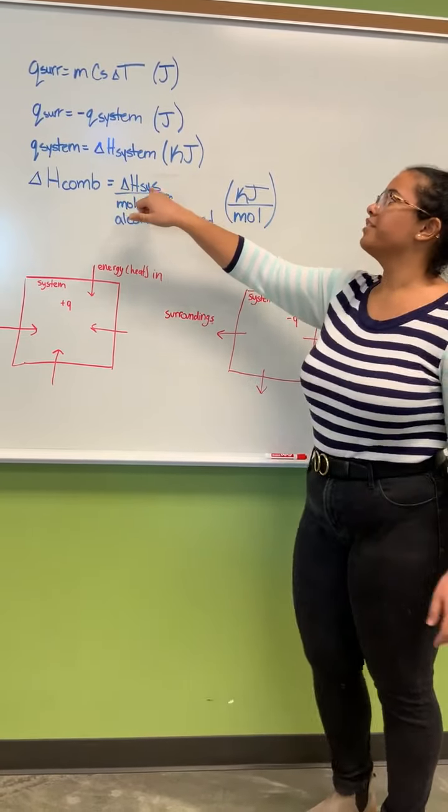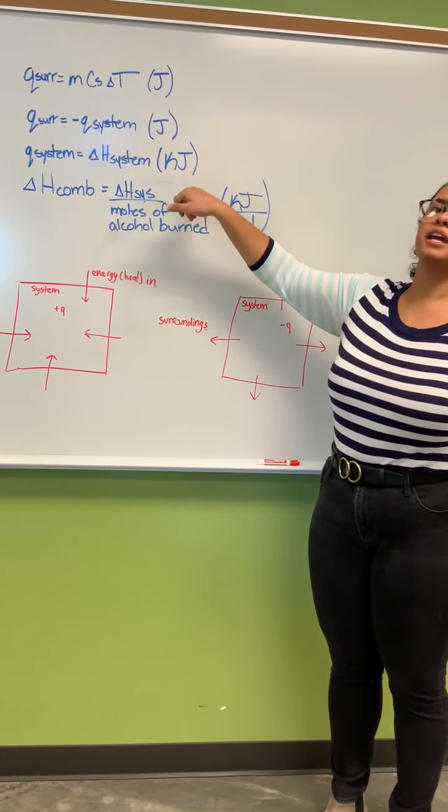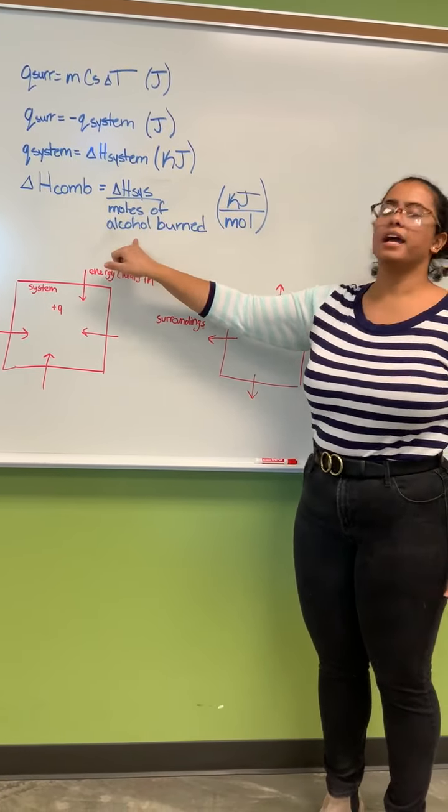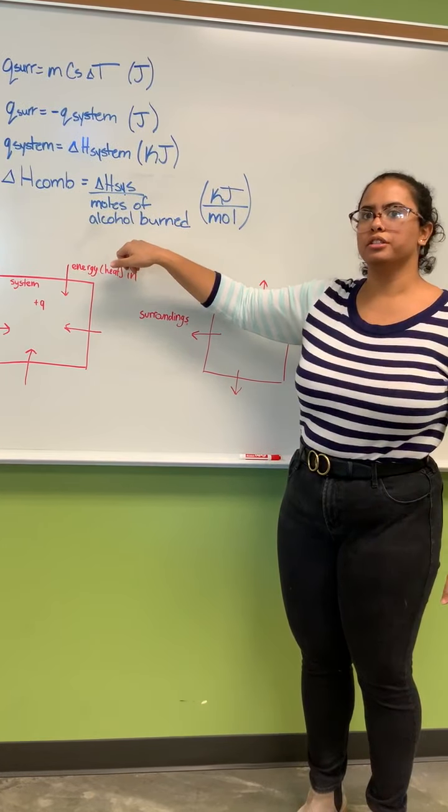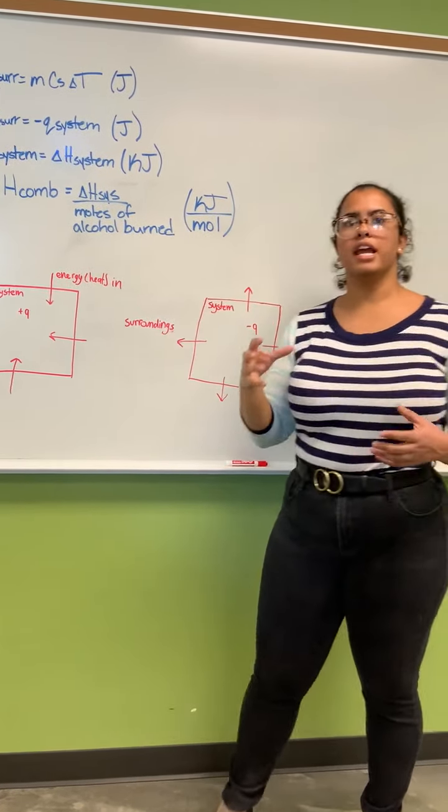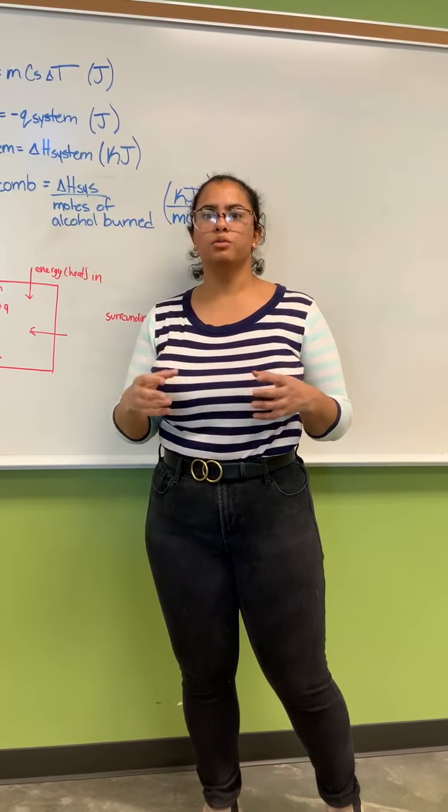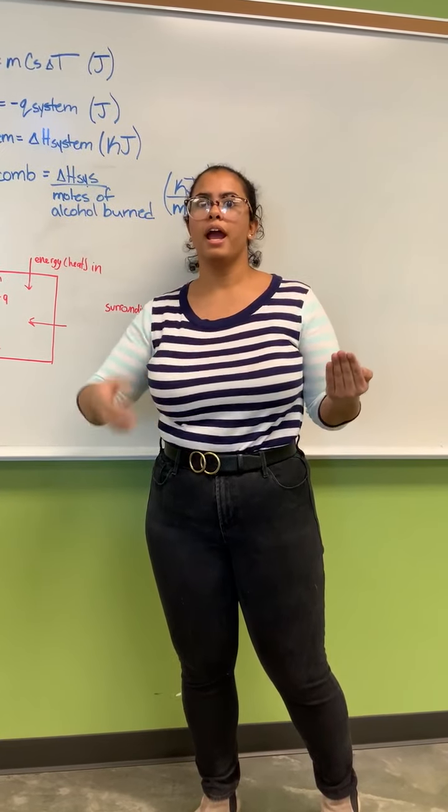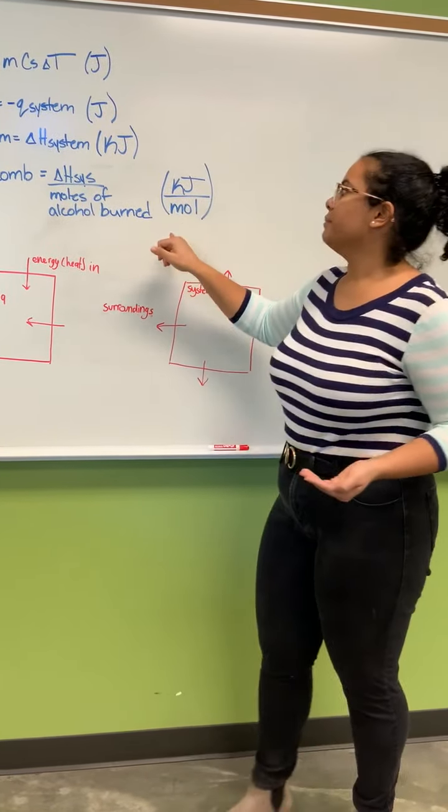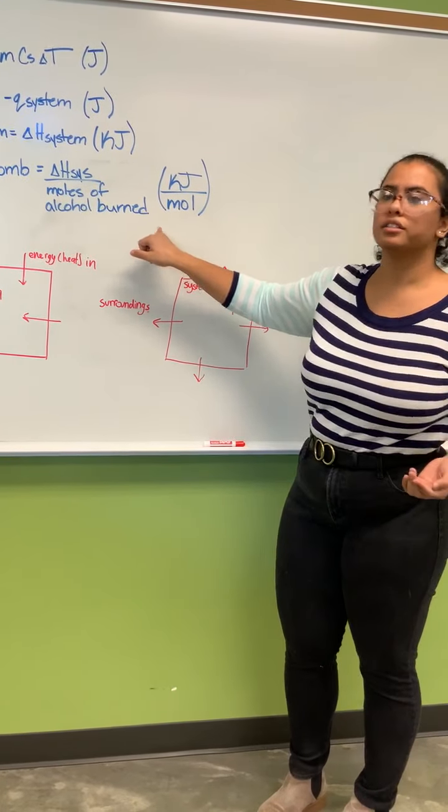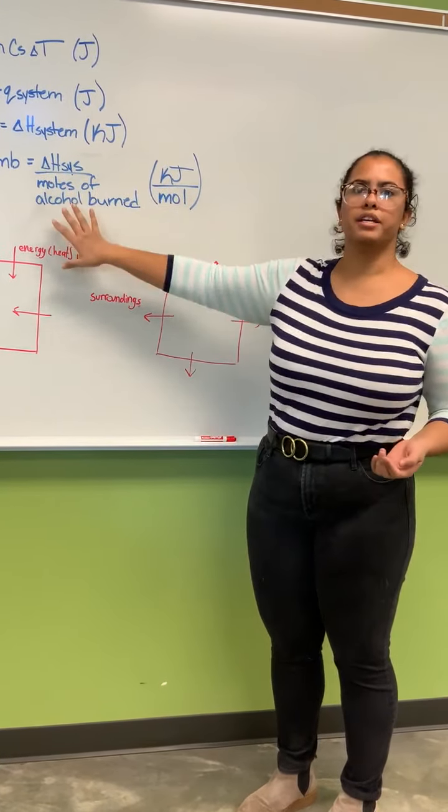Therefore we have the change of enthalpy of the system divided by the moles of the alcohol burned. So whatever change in mass that you found when you measured the alcohol before and after, that is the mass that you will convert to moles and use in this equation.